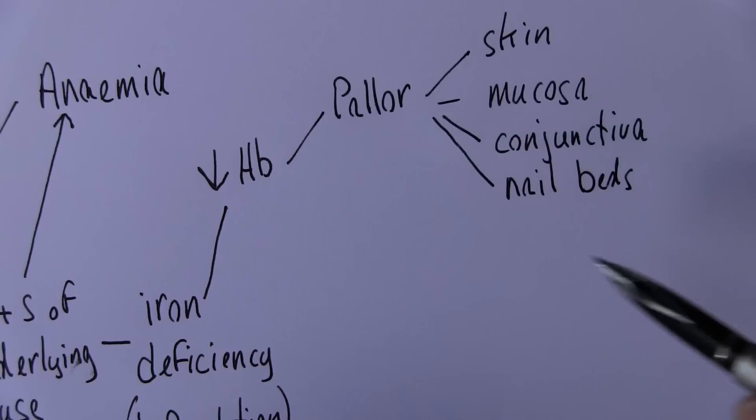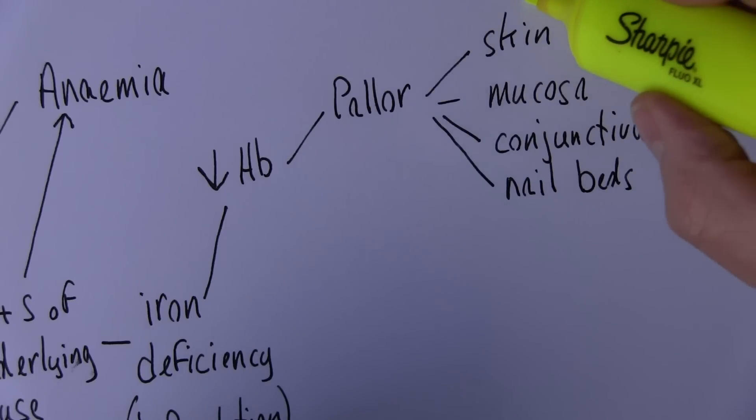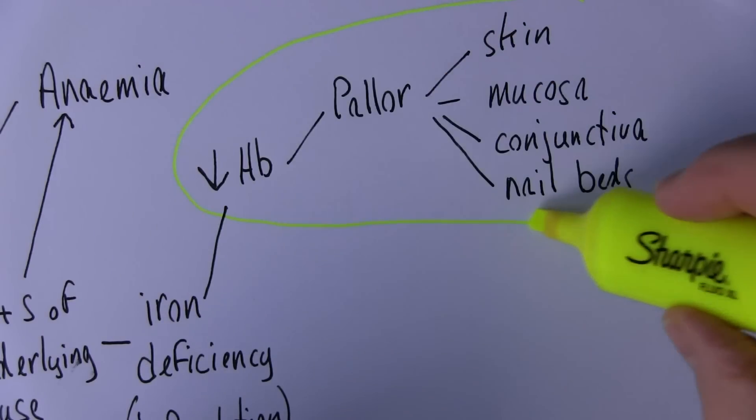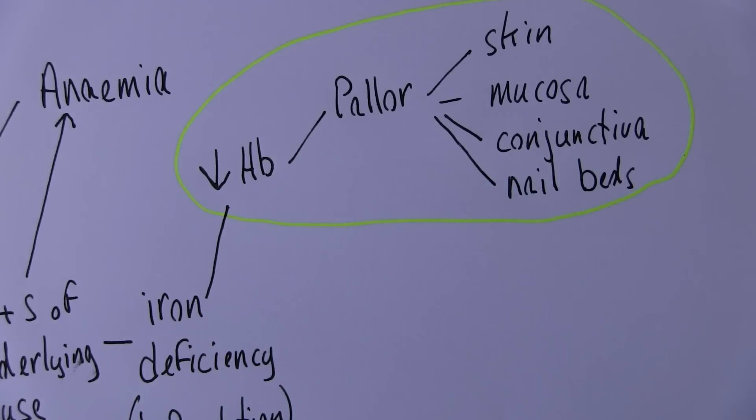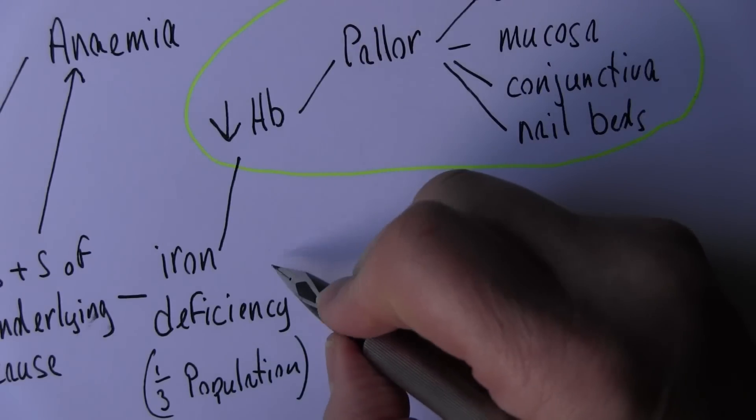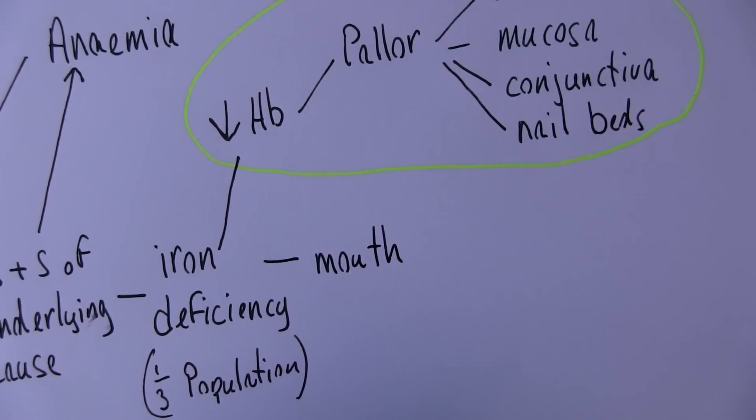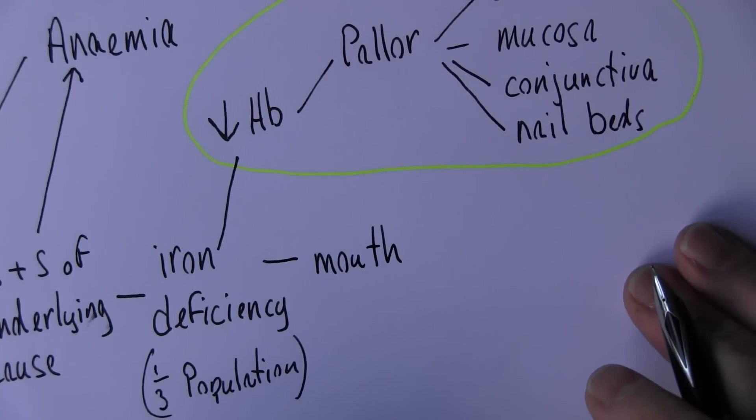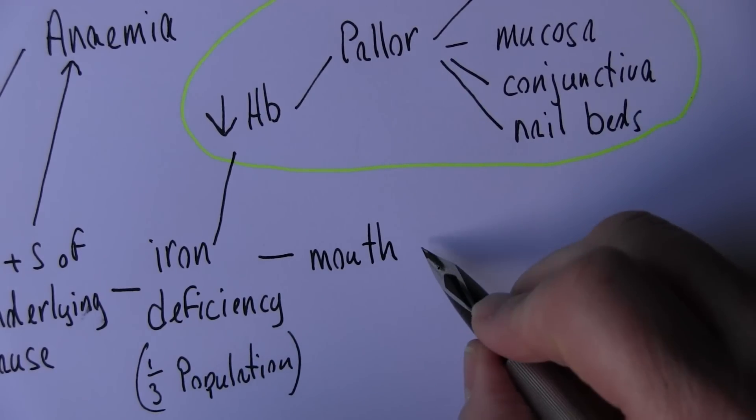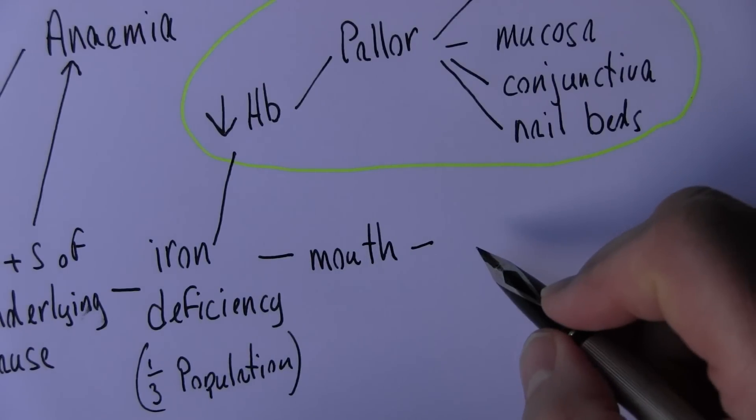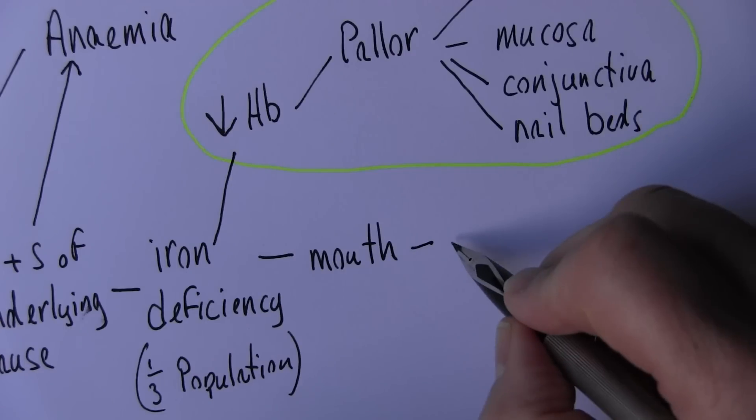So that group's caused by the reduction in the hemoglobin. The iron deficiency and the reduction in the hemoglobin. Now another group of features caused by the iron deficiency affect the mouth. Mouths are very useful to look at for clinical indicators of all sorts of things. And the first feature of iron deficiency that often presents and we do see quite commonly in iron deficiency areas is glossitis.